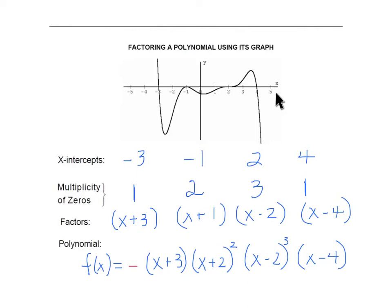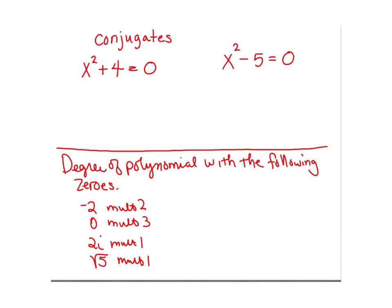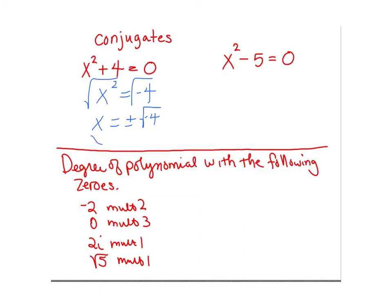Please make these connections, because making connections between x-intercepts, factors, multiplicity, and end behavior will help you remember when you have to graph. Now, if you solve the equation x squared plus four equals zero, subtracting four from both sides and taking the square root, you get x equals plus or minus the square root of negative four. The square root of four is two, and the square root of negative one is i, so this is plus or minus 2i — complex, non-real conjugates.